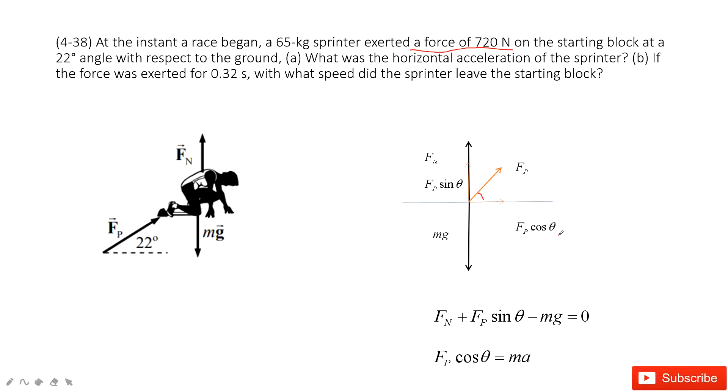There is the net force Fp cosine theta equals mass times acceleration. Therefore, you can see Fp is given and angle theta is given. Very easily you can get the acceleration for this person.